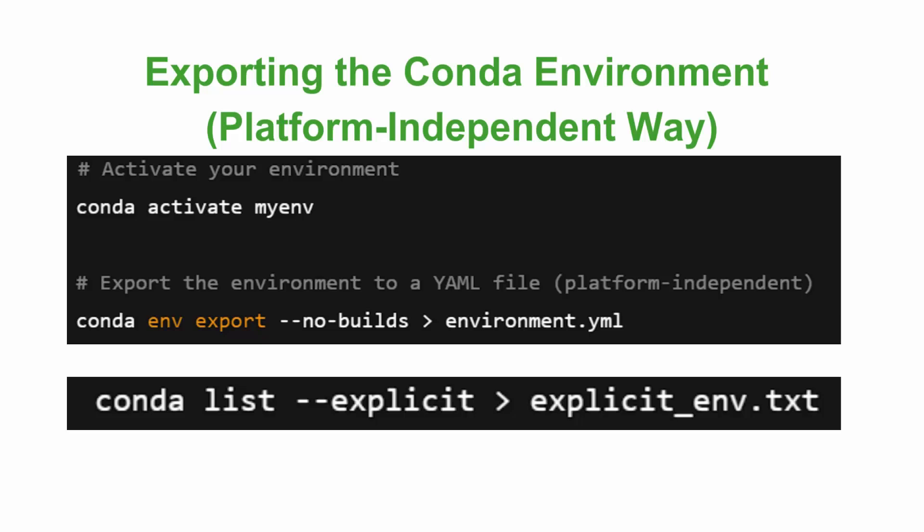The first method is exporting the conda environment in a platform-independent way. You can use the --no-builds flag to avoid OS-specific build info that may break on different platforms. First, activate your environment by writing the command 'conda activate' and then the name of your environment. Then export the environment to a YAML file using 'conda env export --no-builds' and then the name of your YAML file.